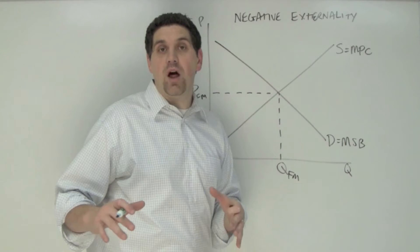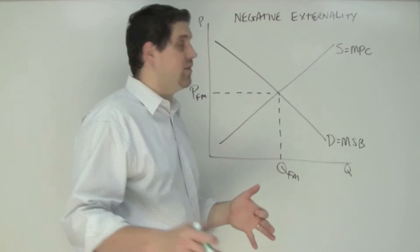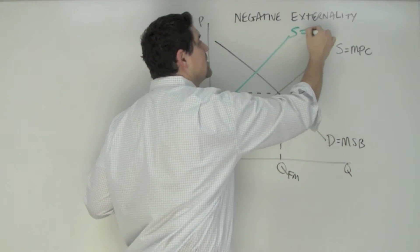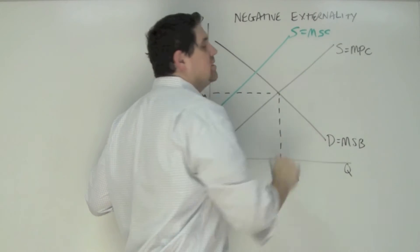What about deadweight loss? To show deadweight loss, I have to draw a second supply curve. This right here is the supply curve which represents the marginal social cost to society.